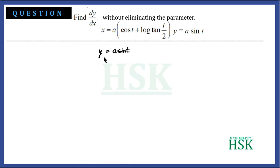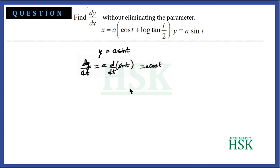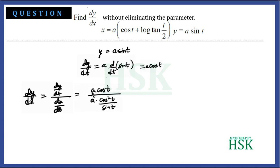Now, y = a sin t is given, so dy/dt = a cos t. Therefore, dy/dx = (dy/dt) / (dx/dt) = a cos t divided by a cos²t / sin t.